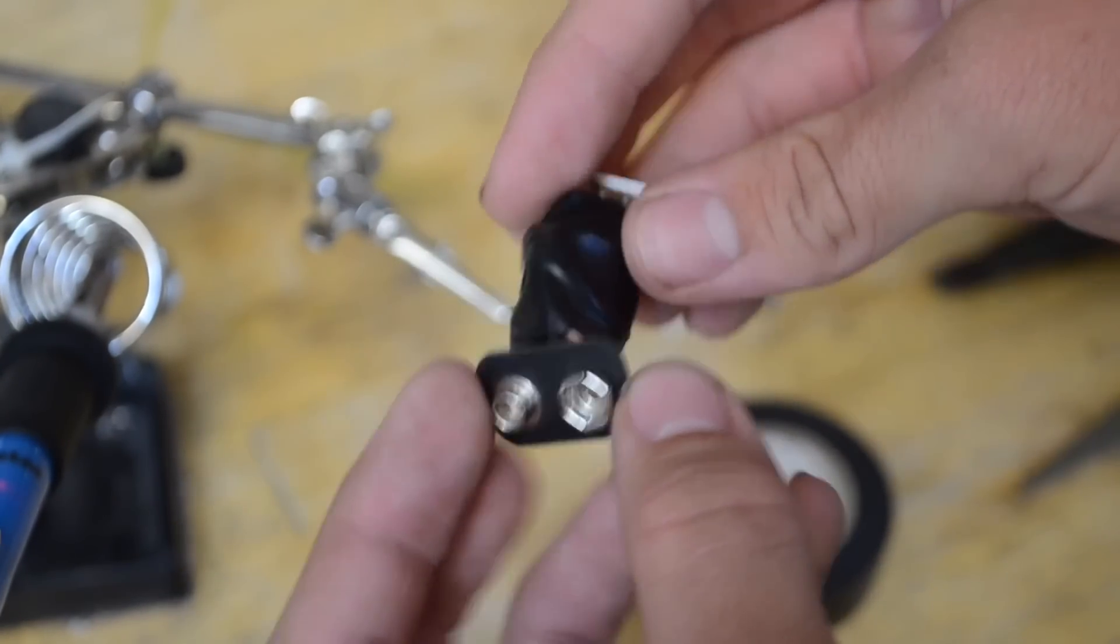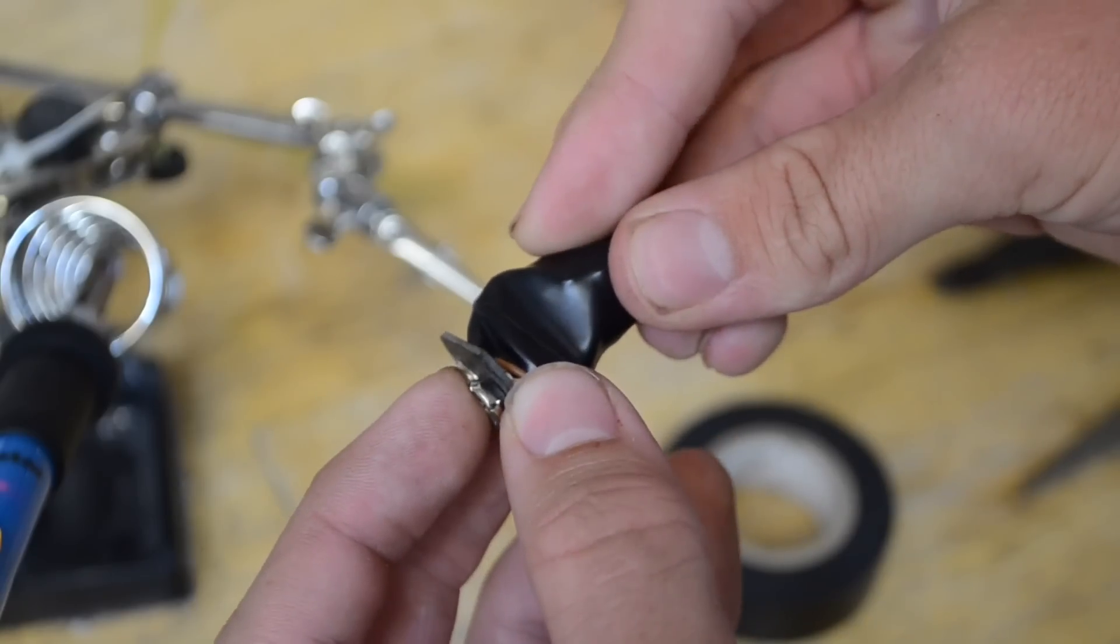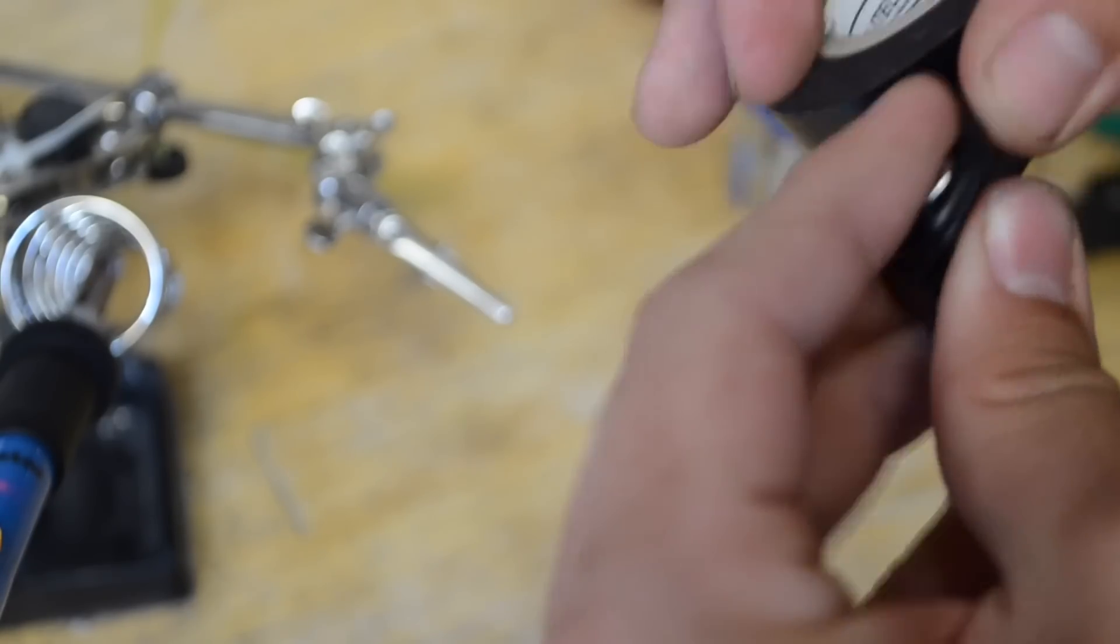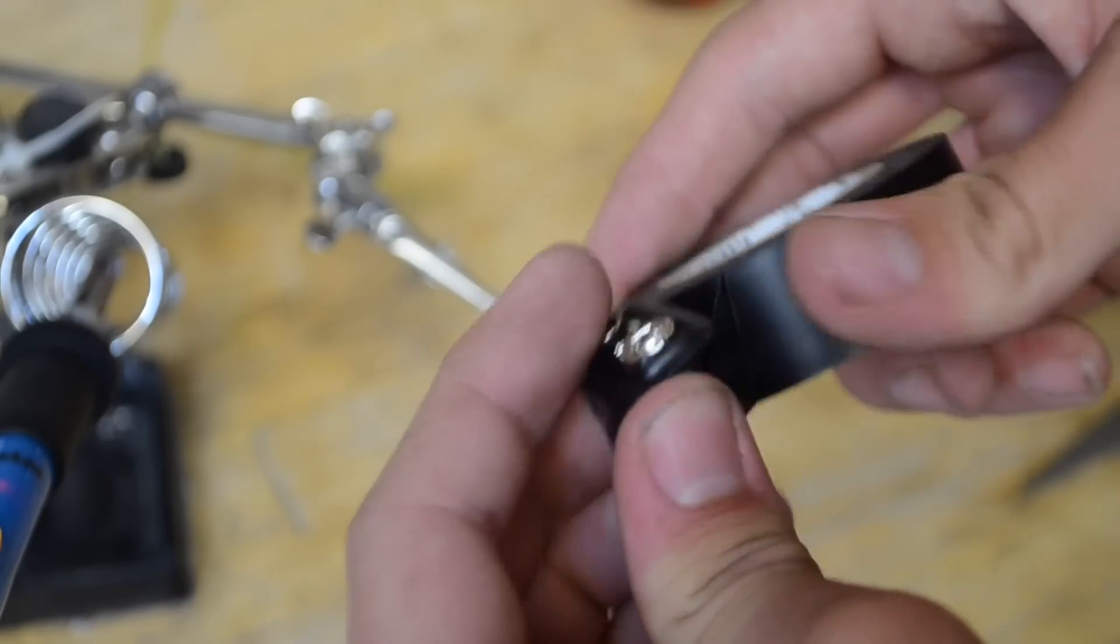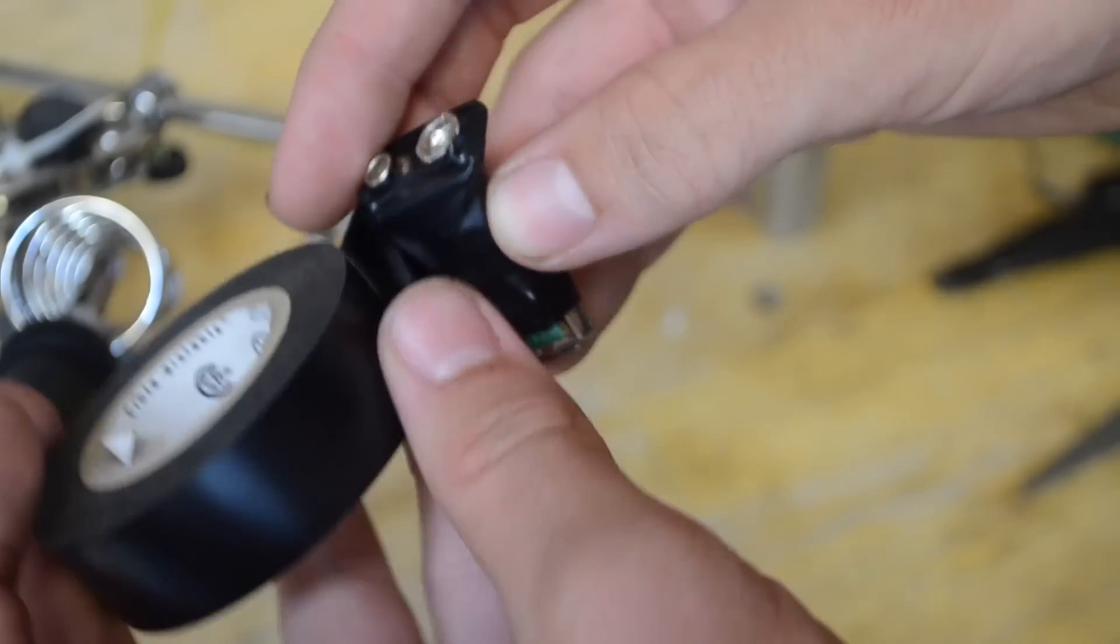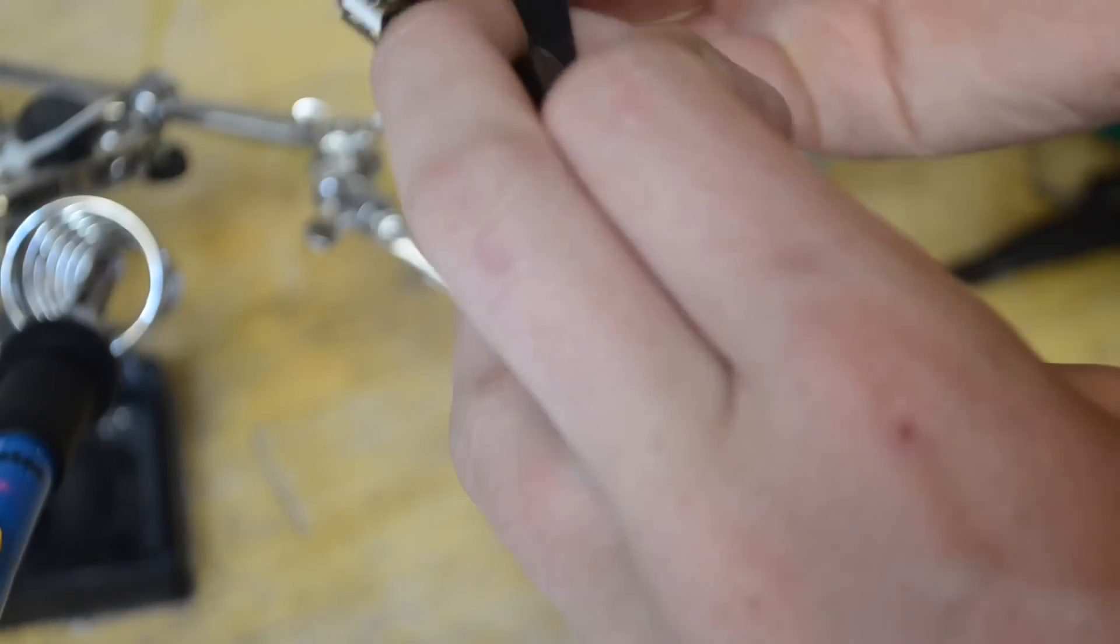Now I'm going to take some electrical tape and secure this to the back end right here. And now that we've done that, I'm going to go ahead and wrap some more electrical tape around this to make it look a little bit nicer.